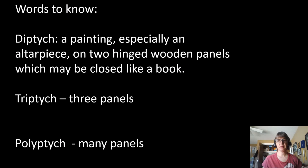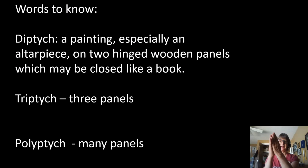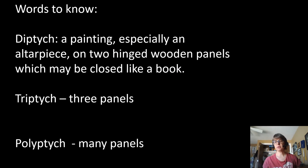There are three words to know: diptych, triptych, and polyptych. The Greek root 'di' means two, and 'tych' refers to a panel or plate — so a diptych is two panels that are hinged and can open and close. A triptych has three panels: one in the middle and one on each side that can fold in. A polyptych, which is what the Ghent Altarpiece is, has many panels — 'poly' being the root word for many.